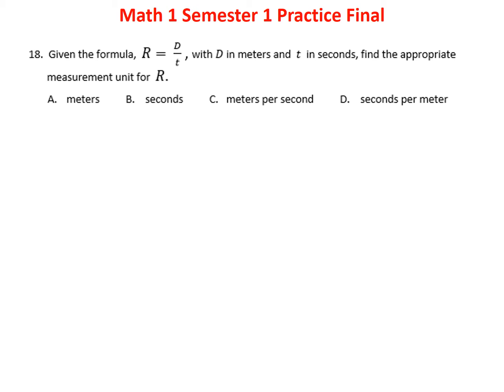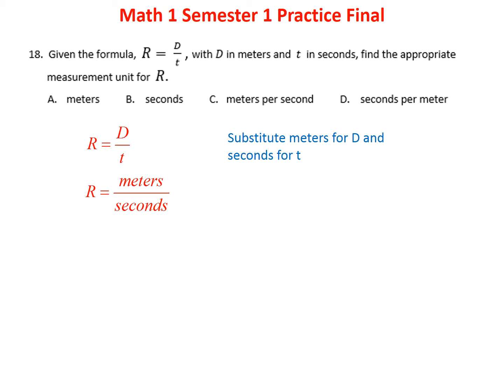Problem eighteen asks for the appropriate unit for R in a formula. Plugging in meters for distance and seconds for time, we get meters over seconds — meters per second, just like miles per hour. The answer is C.